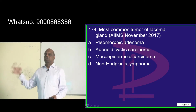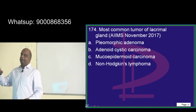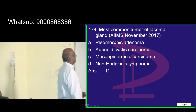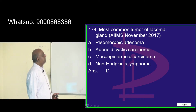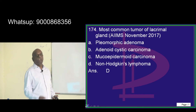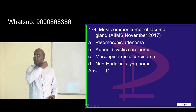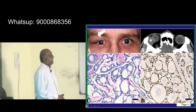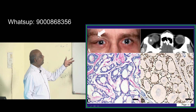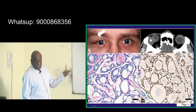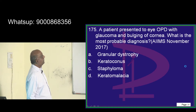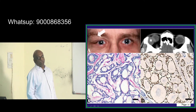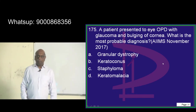The most common tumour of the lacrimal gland was a question in AIIMS November 2017. The options include non-Hodgkin's lymphoma, pleomorphic adenoma, and adenoid cystic carcinoma. Looking at the histopathology shown, you can recognise this as adenoid cystic carcinoma of the lacrimal gland.